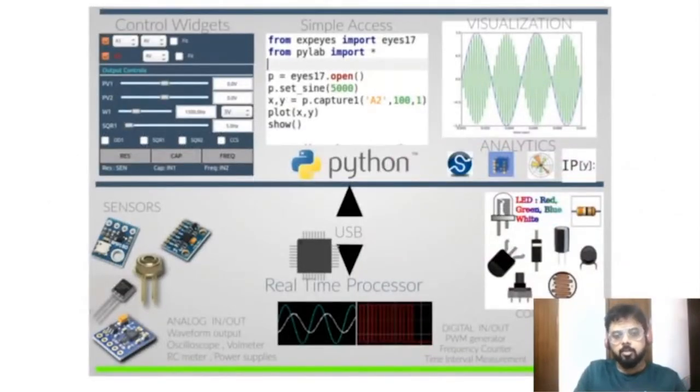In this schematic you can see the functioning of ExpEYES. On the bottom half you have the hardware which is a microcontroller that interfaces with the real world, and the top half you have the software side which communicates with the hardware via USB and allows users to visualize acquired data, have control widgets, or analyze this data.